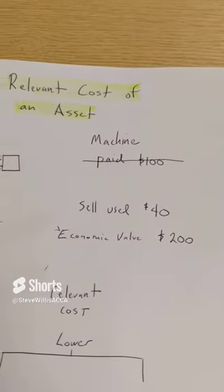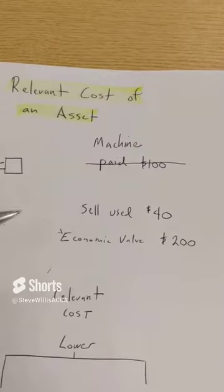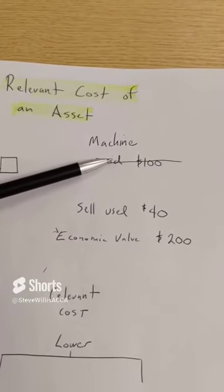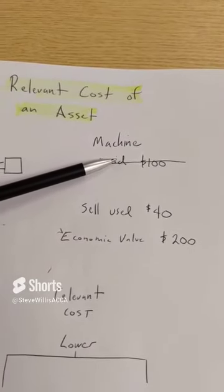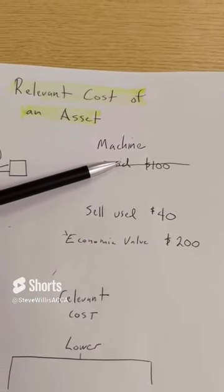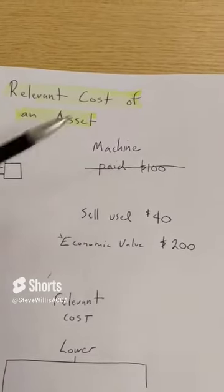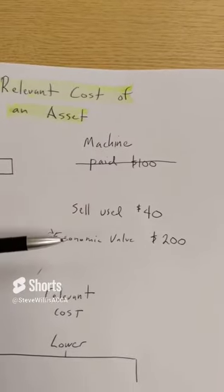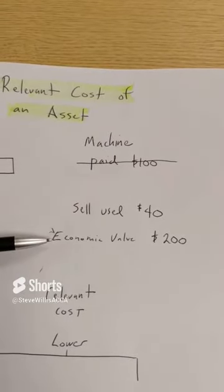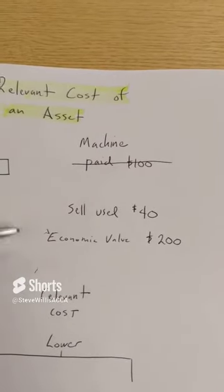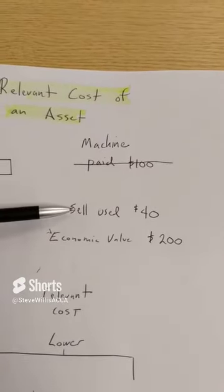Well, the first thing I want to do is ignore the purchase price. That's a cash flow in the past — a sunk cost. I want to understand what it's worth to me now.